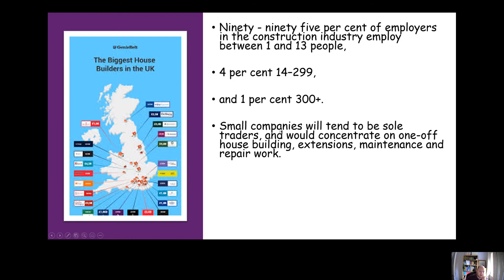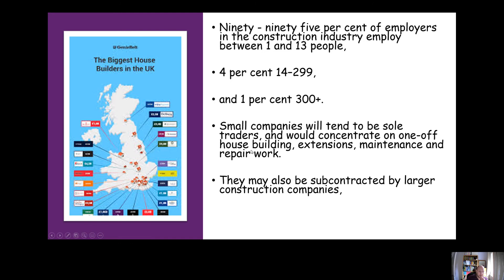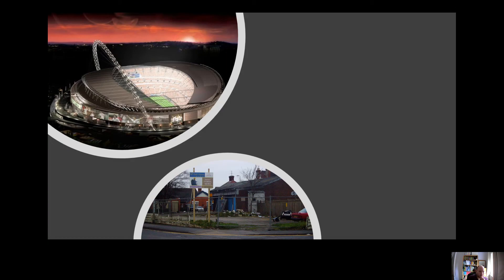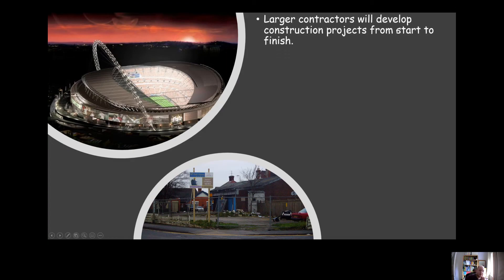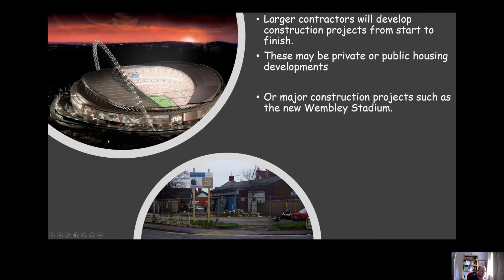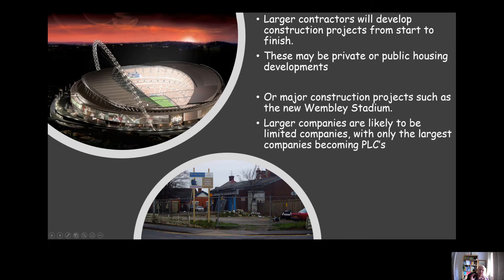Generally speaking, small companies will be sole traders, concentrating on one-off house building, extensions, maintenance work, repair work, and maybe fitting boilers. They might also be subcontracted by larger construction companies to do part of a job. The larger companies will generally be the main contractors, developing construction projects from start all the way through — perhaps private or public housing development, or big construction projects like Wembley Stadium. Larger companies will almost certainly be limited companies.